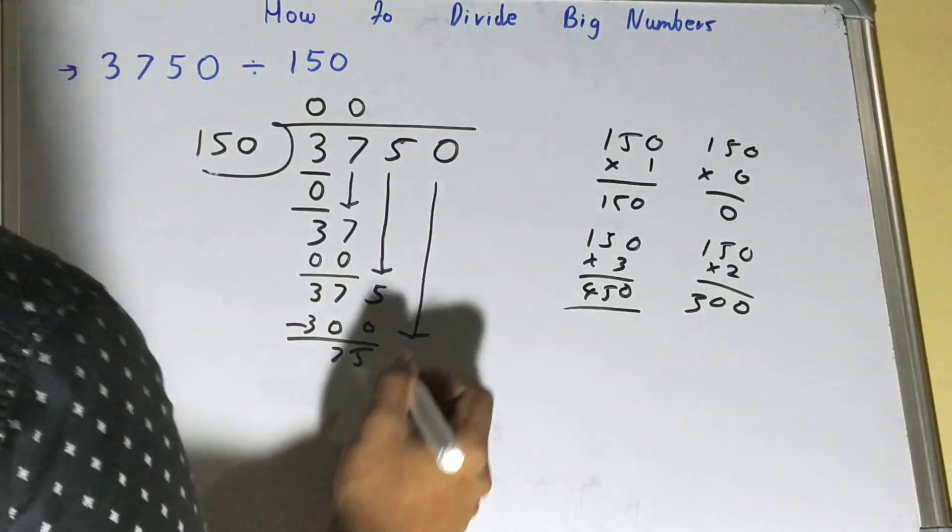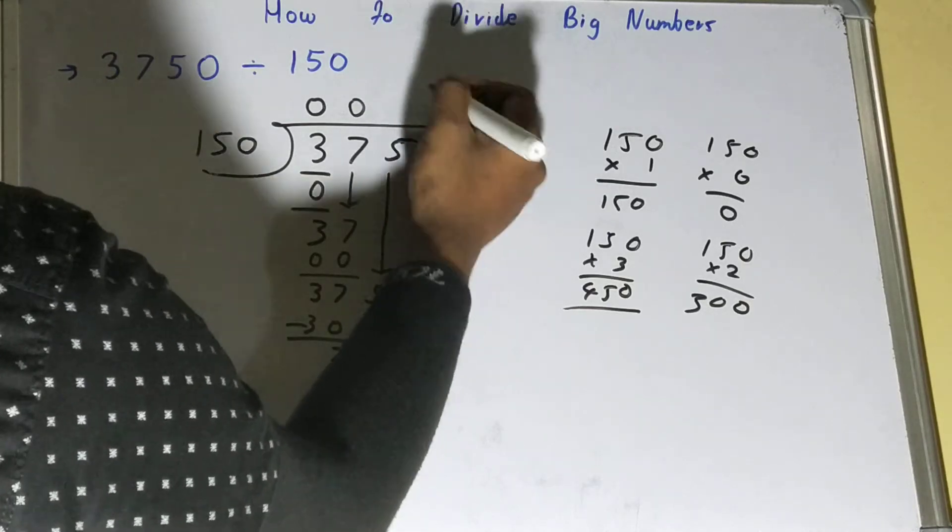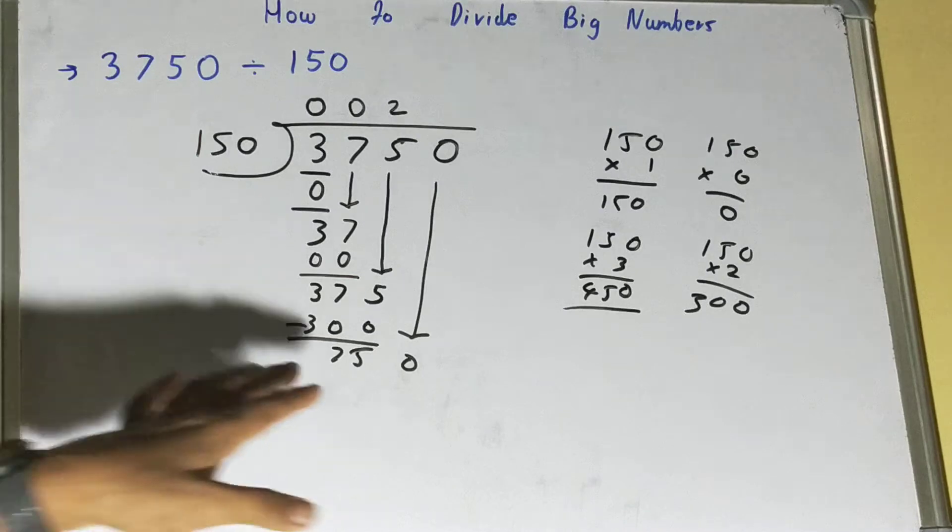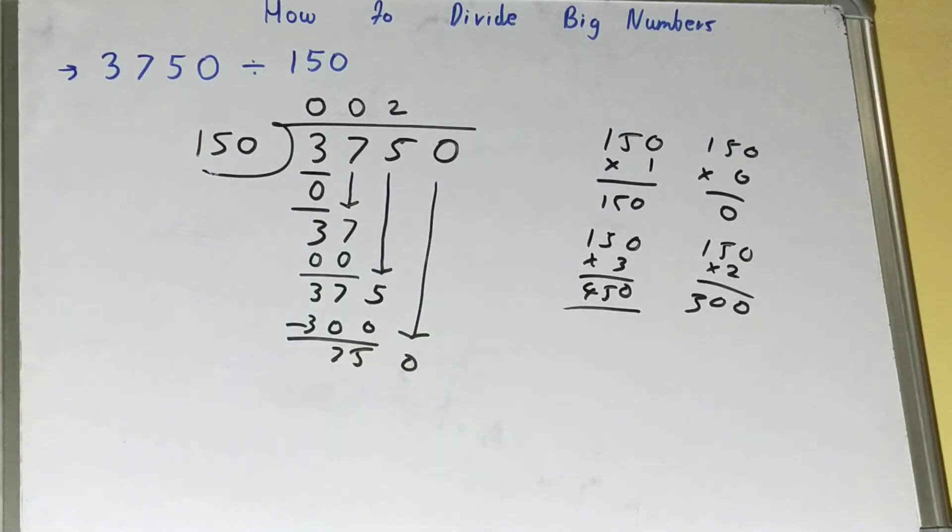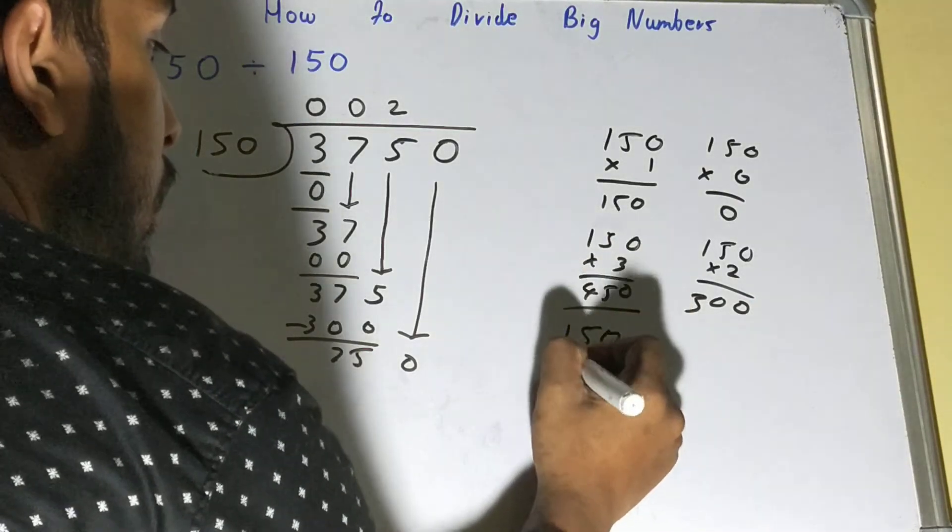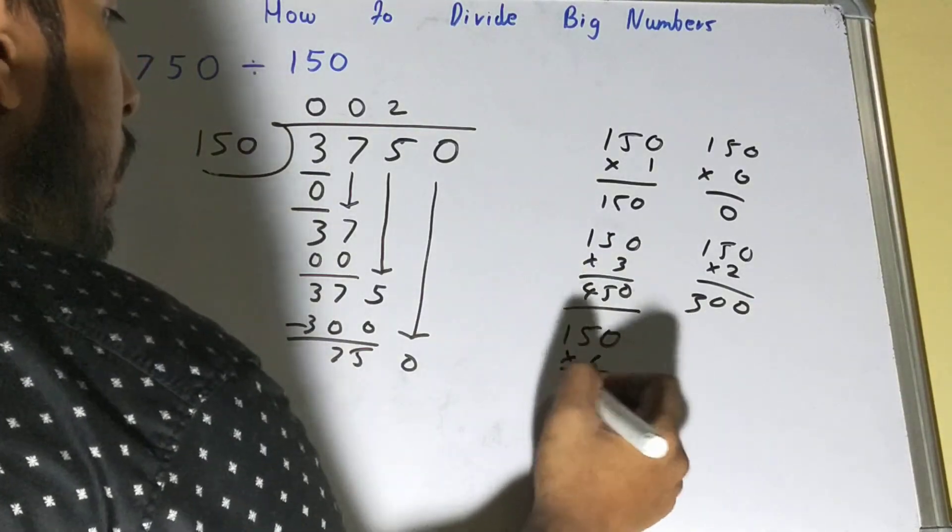We forgot to write the multiplied number, that is 2. So we have 750 now. You can take an approximate value. Let's multiply 150 by 6 - that's 900, which is a bigger number than 750.